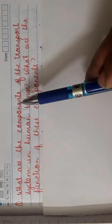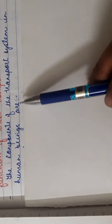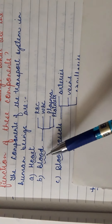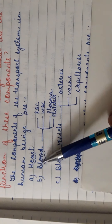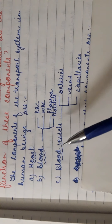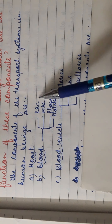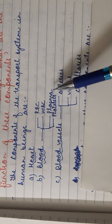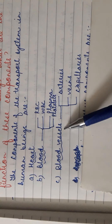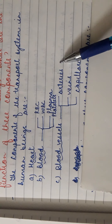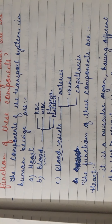We need to mention the various components of the transport system and their functions. The components of the transport system in human beings are: heart, blood, and blood vessels. Blood further contains RBC (red blood cells), WBC (white blood cells), plasma, and platelets. Blood vessels include arteries, veins, and capillaries.